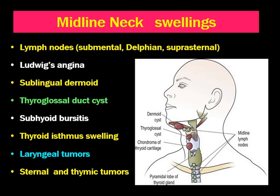Next is sublingual dermoid, which is usually a congenital lesion that may have been present for a long time. Sometimes a plunging ranula may also plunge from the floor of the mouth to the midline neck, although it usually presents as a lateral swelling.